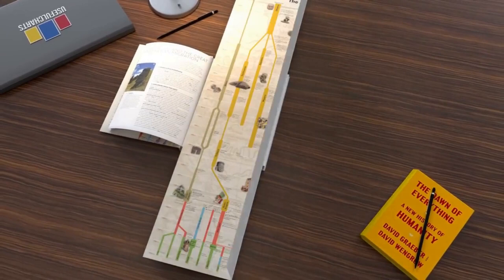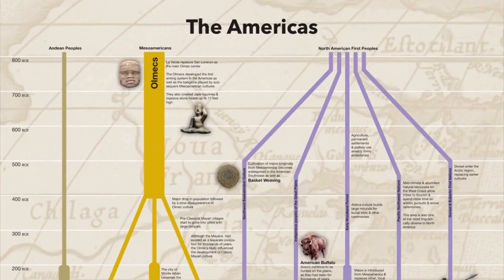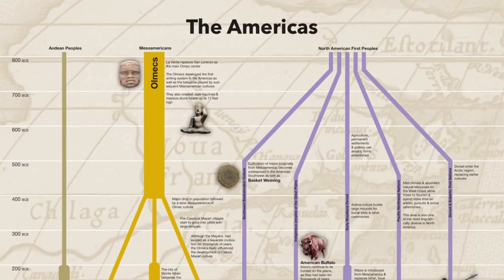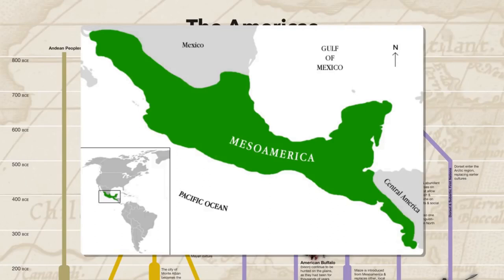As usual, the chart opens up like this. If we zoom in to the top, you'll see that this time the timeline has three main sections. On the left, we have the Andean peoples from South America, and on the right, we have the various peoples from North America. In the middle are the Mesoamericans. Meso literally means middle, and in this case, it refers to the fact that Mesoamerica is in between the main part of North America and South America.